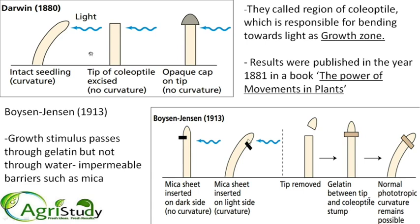So: mica sheet inserted on the dark side leads to no bending; mica sheet inserted on the light side still allows bending. If the tip is removed and gelatin is placed between the tip and coleoptile stump, normal phototropic curvature is restored, because gelatin acts as a carrier, transferring auxin from the tip to the coleoptile. The growth stimulus passes through gelatin but not through water-impermeable barriers such as mica.